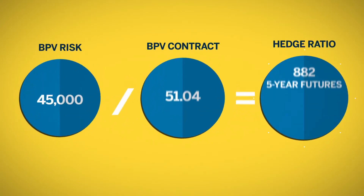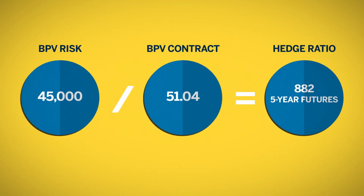Hedge ratio equals value at risk, or BPV risk, divided by value of contract, or BPV contract. 45,000 divided by 51.04 equals 881.66, or 882 five-year futures contracts.